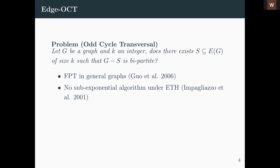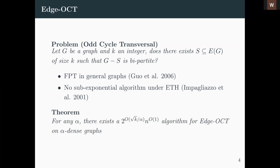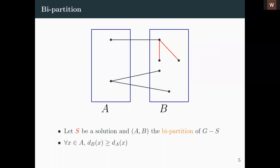Let me define the problem. Given a graph G and integer k, the Edge Odd Cycle Transversal problem asks for the existence of a set S of k edges such that G minus S is bipartite — can I remove k edges so that the graph becomes bipartite? This is very famously FPT in general graphs, being the most famous example of the iterative compression technique, shown by Guo et al. in 2006. However, under ETH, no sub-exponential algorithm exists. What we show here is that if you restrict to alpha-dense graphs, a sub-exponential algorithm exists — in fact with running time two to the O(sqrt(k)).